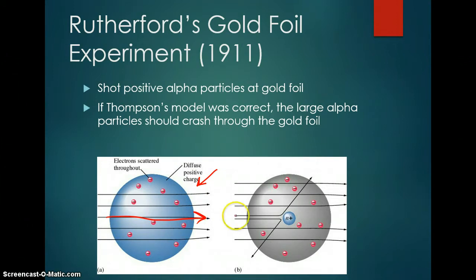What he found was that, in fact, some of the particles came in and were deflected, which meant that there must be something more substantial in parts of an atom. And if we look at his experiment, some of the particles bounced back.